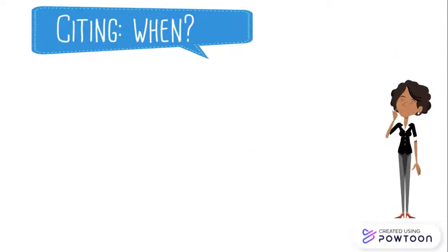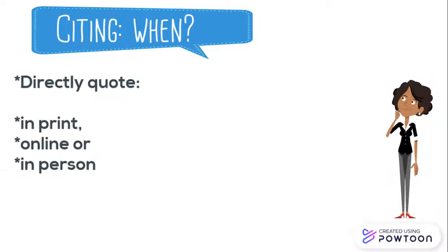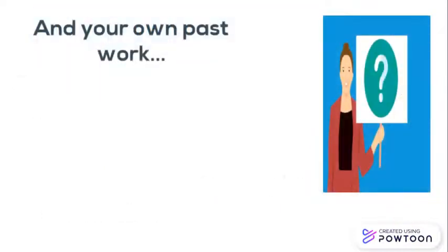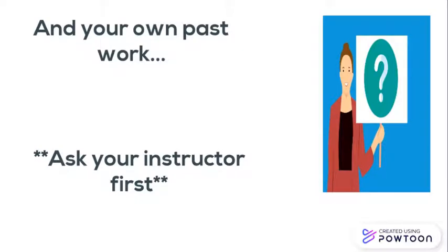If you directly quote another person — whether their work appeared in print, online, or even if you heard it in person — you must cite their words. Rewriting someone else's words or summarizing their ideas, known as paraphrasing, isn't your original work, so you will need to cite every source you've used. And yes, you do have to cite yourself if you use words or ideas from previous papers or projects.